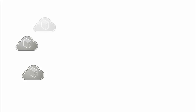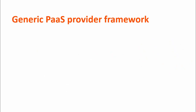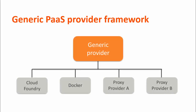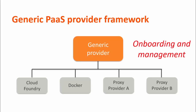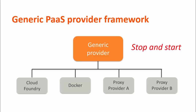The number of PaaS services continually grows in the marketplace, and BMC needed to improve the speed of integration with BMC Cloud Lifecycle Management. To address this need, BMC created a generic PaaS provider framework, which includes two layers: a generic provider and the proxy providers. The generic PaaS provider implements commonly used capabilities such as persistence of object models, onboarding and management of environments, orchestration, auditing, governance, out-of-the-box UI capabilities, and common day-to-day operations such as start, stop, and decommission. With the generic PaaS provider, proxy providers do not need to repeat this functionality.